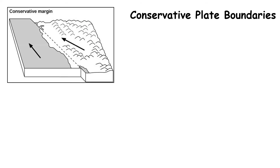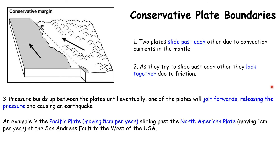A conservative plate boundary occurs where two plates slide past each other, either in the same direction or in opposite directions. The two plates try to slide past each other but lock together due to friction, building up huge pressure over decades until one jolts past the other. We feel this as shaking when the pressure is released — a large earthquake. There are no volcanoes because there are no openings into the mantle for magma to rise. A famous example is the Pacific plate moving past the North American plate along the San Andreas Fault, causing large earthquakes in California in cities like San Francisco and Los Angeles.